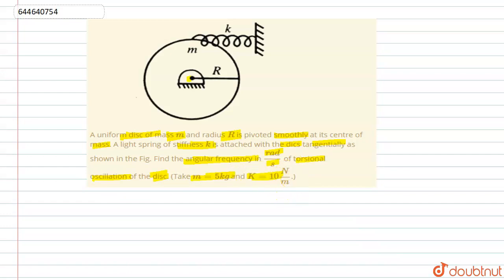Take m = 5 kg and k = 10 N/m. So this is the disk pivoted at the center of mass, and the spring with stiffness k is tangentially attached to the disc, with the other end fixed to a pole.